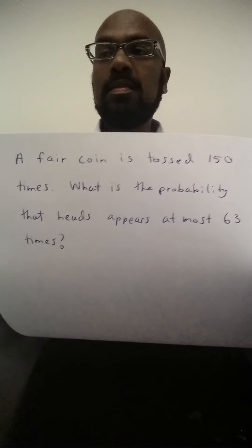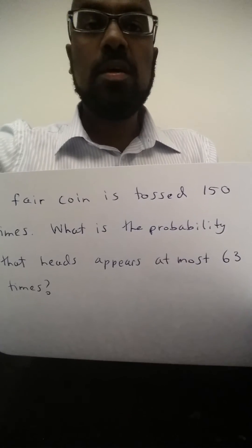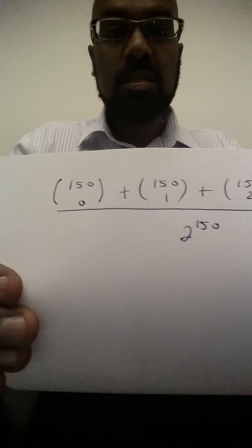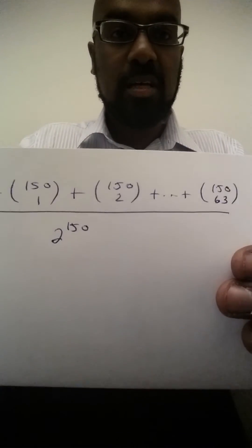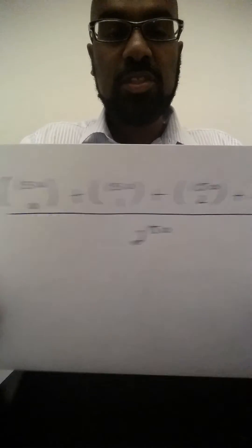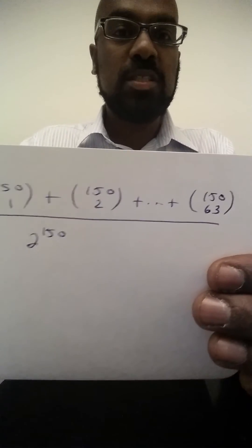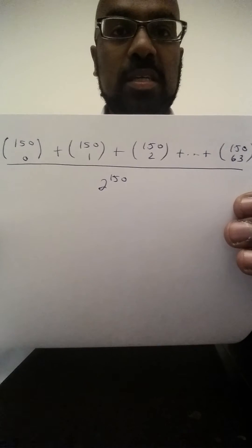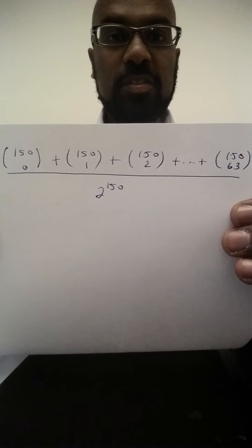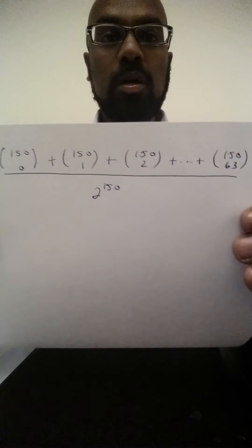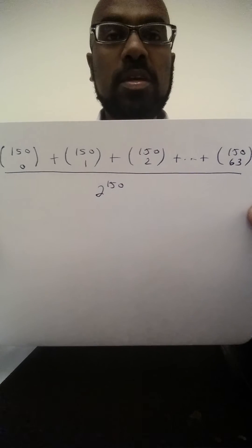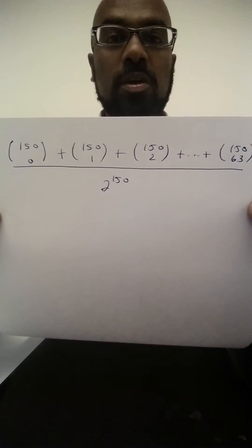As a consequence, the number of ways of flipping at most 63 heads is the sum of all the binomial coefficients from 150 choose 0 all the way to 150 choose 63. And so our probability is this exact number right here, 150 choose 0 plus 150 choose 1 all the way to 150 choose 63 divided by 2 to the 150th power.